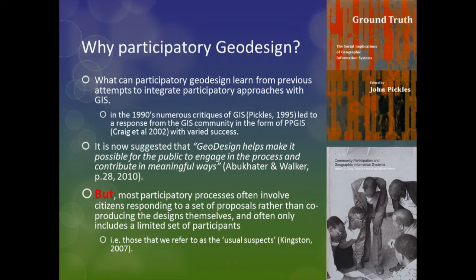You may be familiar with these two books. Ground Truth by John Pickles in the mid-90s was quite critical of GIS — GIS was seen as an evil tool that gave power to those who already had power, not useful for the community. The GIS community responded to that, and meetings in Santa Barbara led to the idea of participatory GIS.